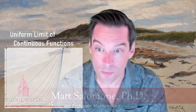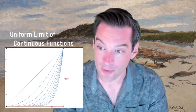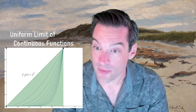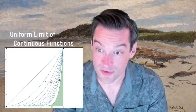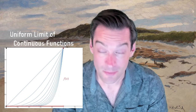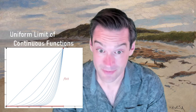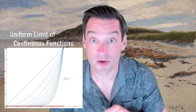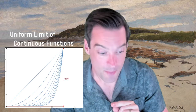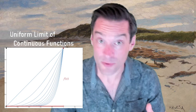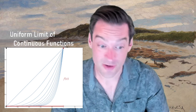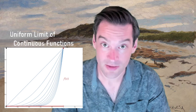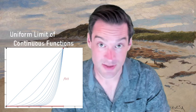What was unsettling about that example is that even though all of the members of my sequence were continuous functions, their limit was not a continuous function. It was a step function that jumped up to one when x equals one and was zero everywhere else. And so maybe that has something to do with the fact that this sequence of functions is not converging to the zero function in the uniform metric sense — in the D-infinity metric.